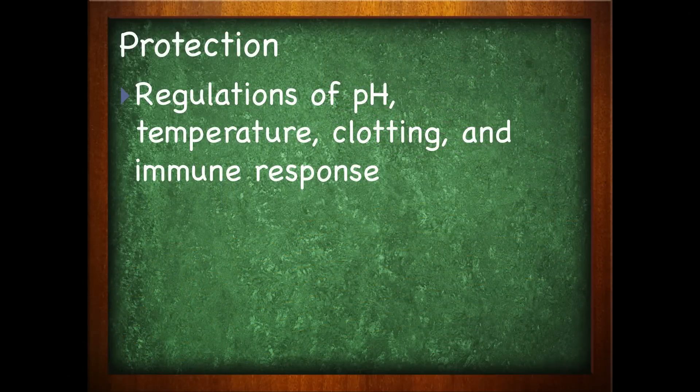Blood has its emergency services and its police force. Blood will help regulate our pH — which has to deal with acids and bases. It will help regulate our temperature, deal with clotting — that's what happens when you start to bleed, it clots and forms that little scab. And it's important in the immune response.